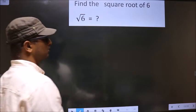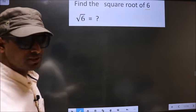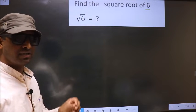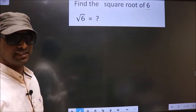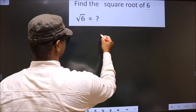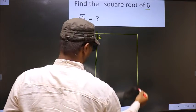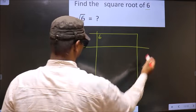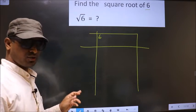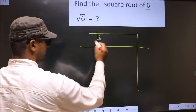Find the square root of 6. To find the square root by long division method, first we should frame it in this way. Now here we have 6.